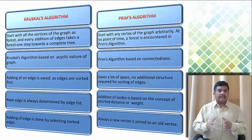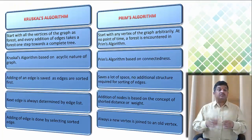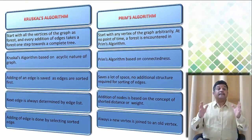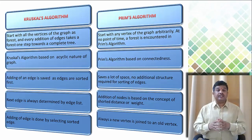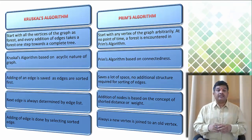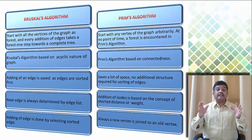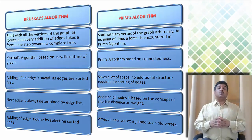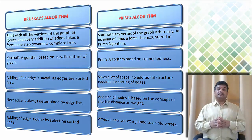The fifth difference: under Kruskal Algorithm, addition of an edge is done by selecting the sorted edge. But under Prim's Algorithm, always a new vertex is joined to the older vertices.